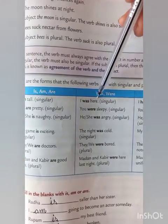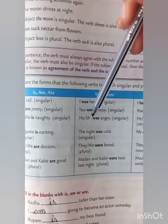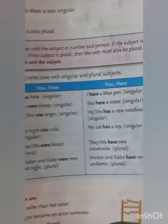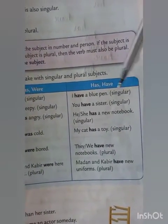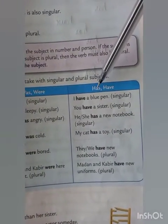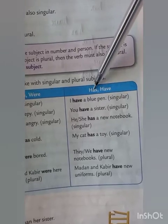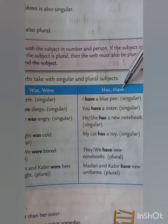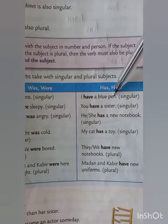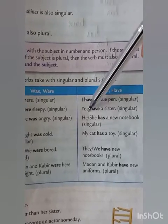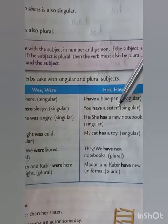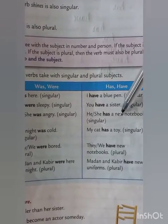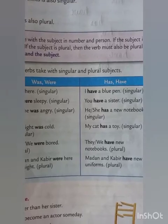I was here. You were sleepy. He or she was angry. Next, has and have — with a singular subject we use has, and with a plural subject we use have. I have a blue pen. You have a sister. He or she has a new notebook.